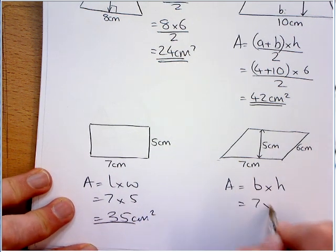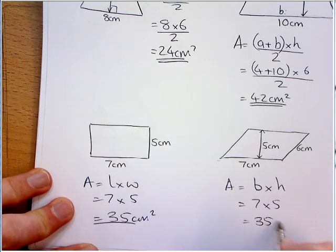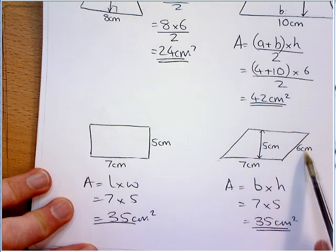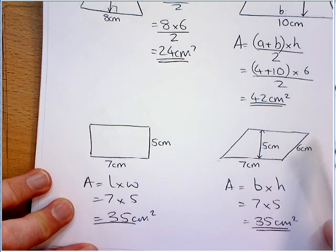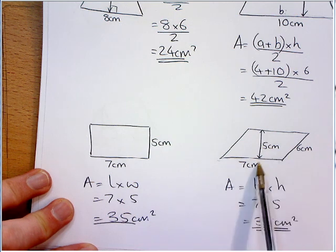So, it's still 7 times 5, and that's still going to be 35. Just, this is not a height. This is a length of a side. It's always the base times the height.